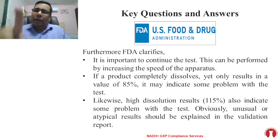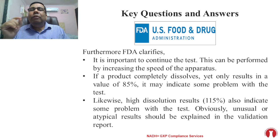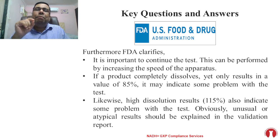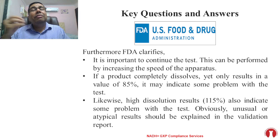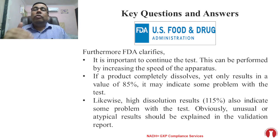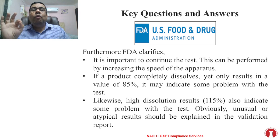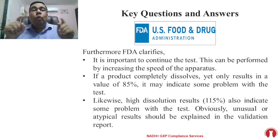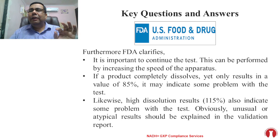If a product completely dissolves yet only results in a value of 85%, it may indicate some problem with the test. Likewise, high dissolution results like 115% also indicate some problem with the test. Unusual or atypical results should be explained in the validation report. These are all copy-pasted from the FDA guideline. Very clear statements are there in the FDA guidance, but still many companies are not following this requirement.